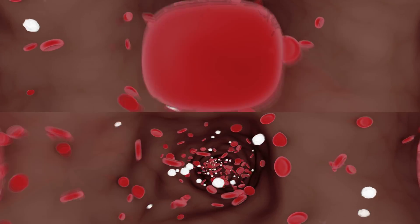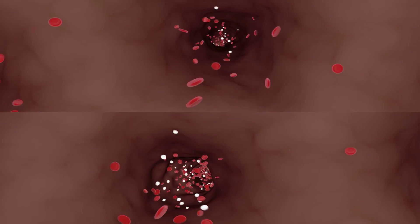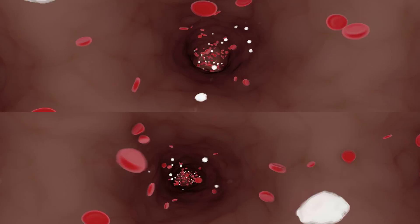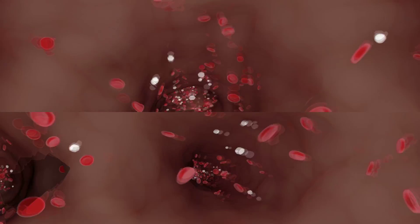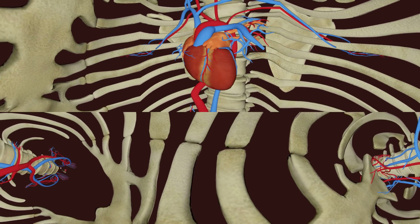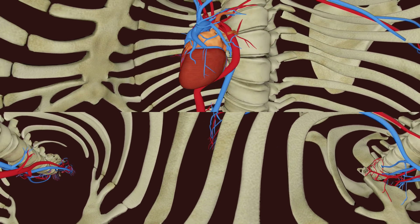The blood filled with oxygen is heading to the left side of the heart through the pulmonary vein. Then, the heart pumps it to the other parts of the body to provide oxygen to the muscles. Did you know that our heart pumps around 182 million liters of blood during our lifetime?